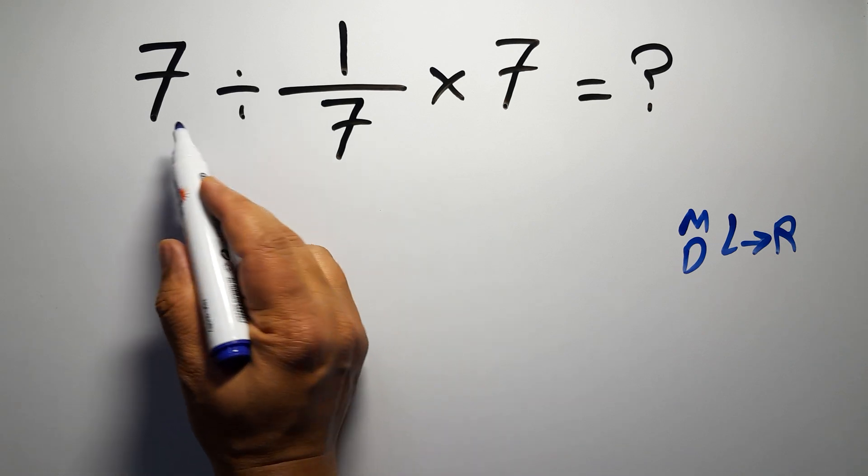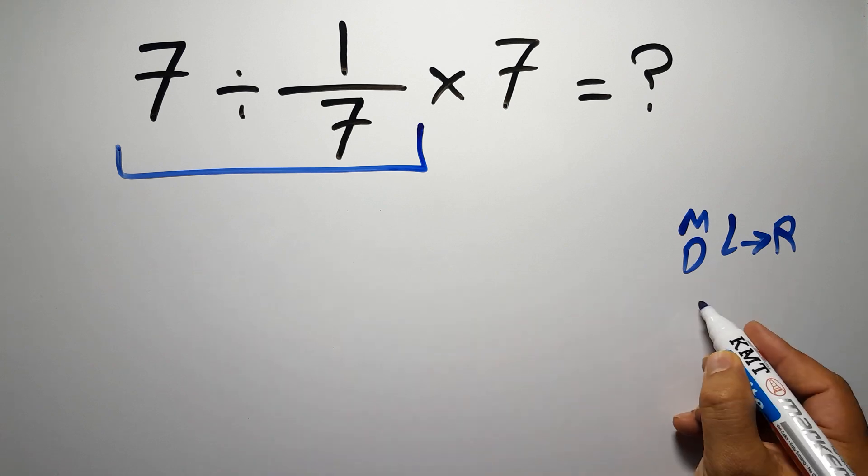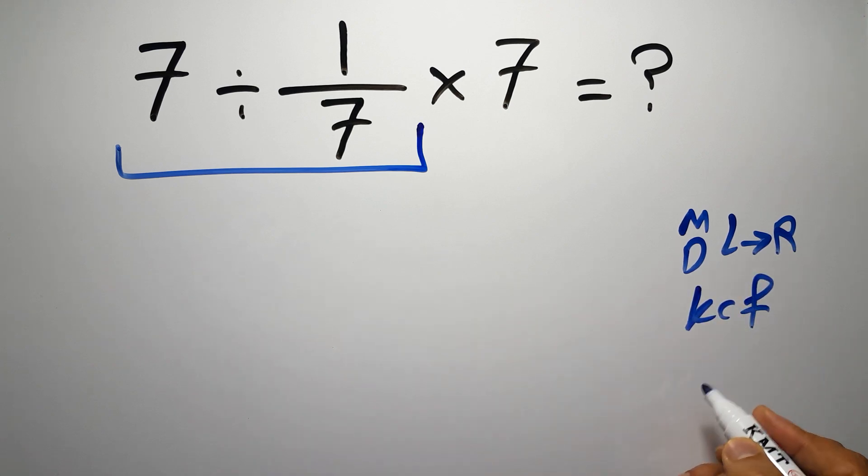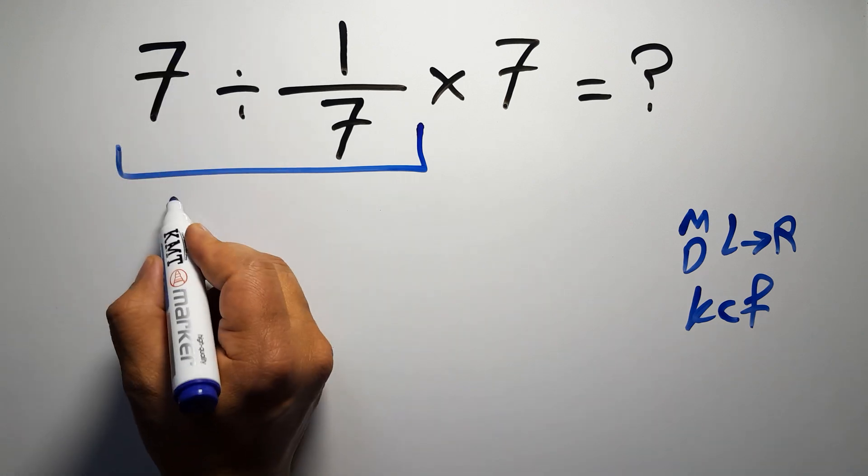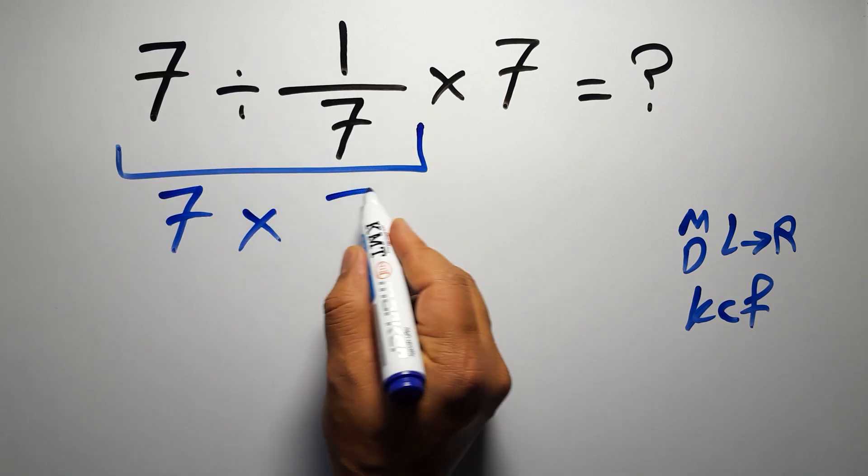So first this division, 7 divided by 1 over 7. According to the KCF rule, K stands for keep, C stands for change, and F stands for flip. We can write: keep the first fraction, change division to multiplication, and flip the second fraction.